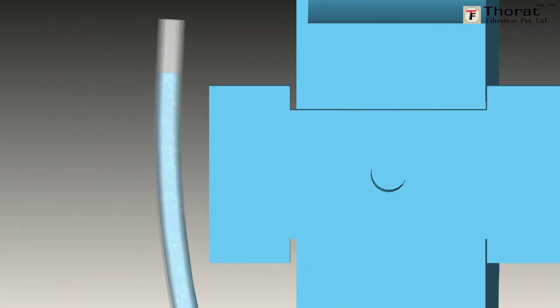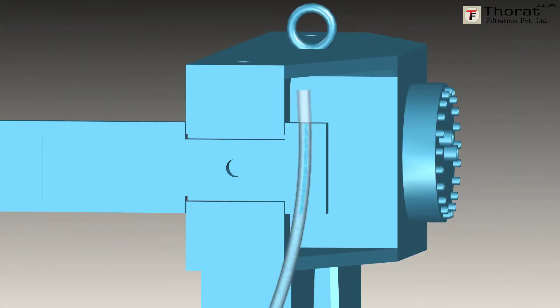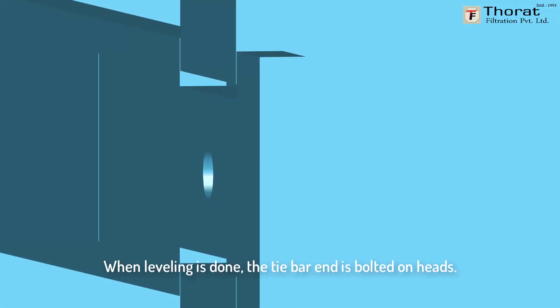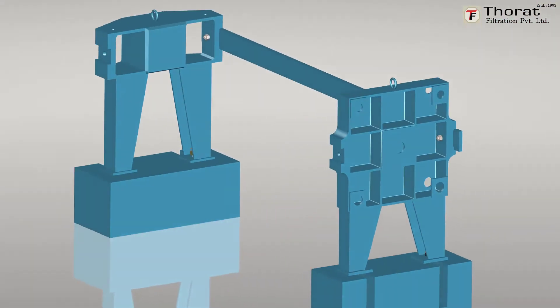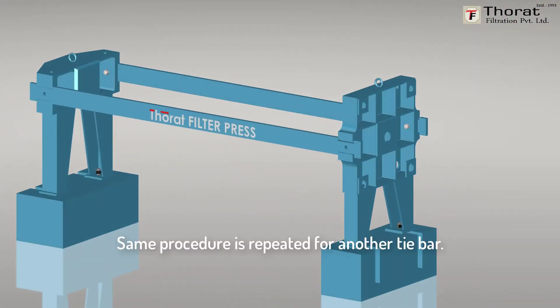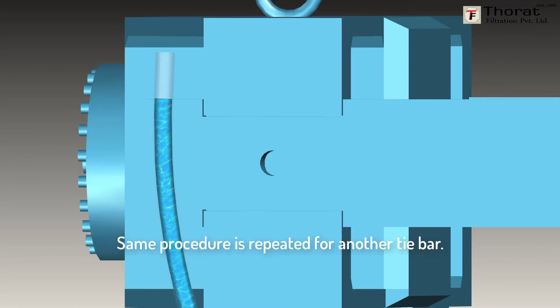When leveling is done, the tie bar end is bolted on heads. Same procedure is repeated for another tie bar.